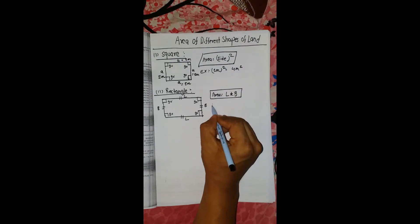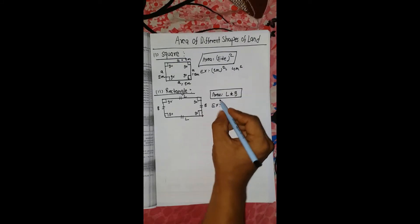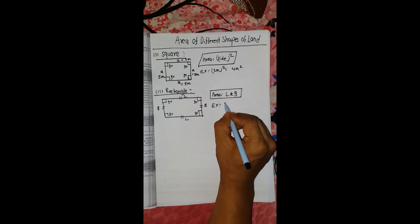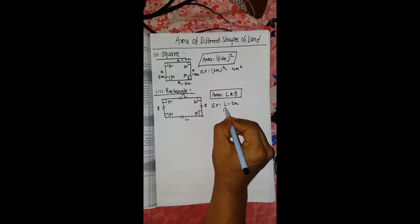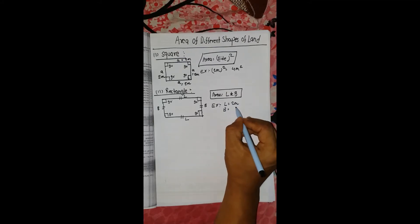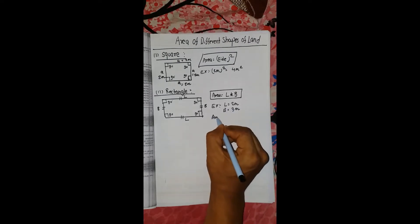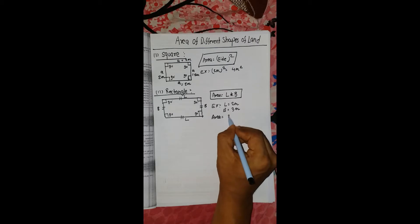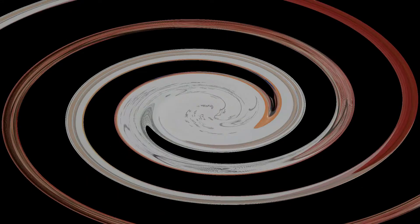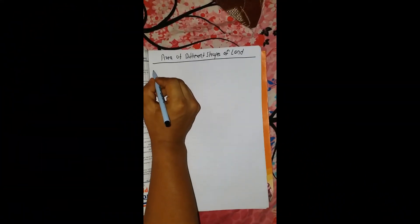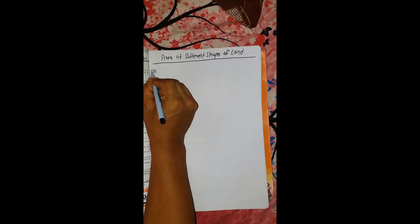For example, suppose the length L is equal to 2 meters and breadth is equal to 3 meters. Then area is equal to 2 into 3, which equals 6 square meters.